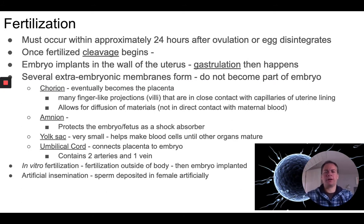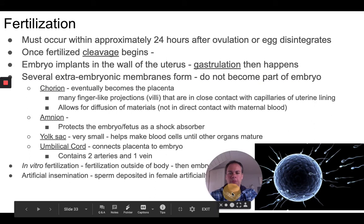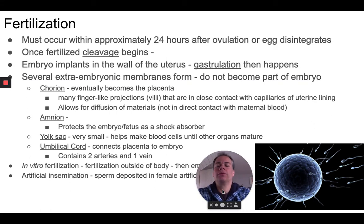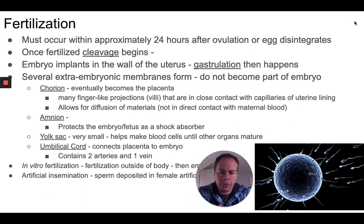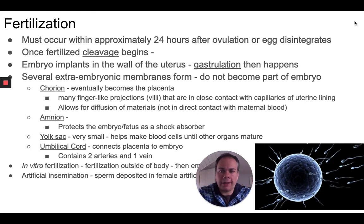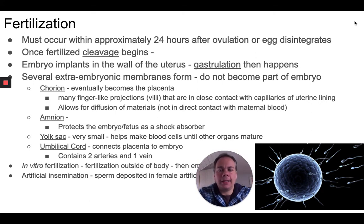Now let's talk specifically about human reproduction and fertilization. In humans, fertilization typically has to occur within about 24 hours of ovulation. Thinking back to the reproductive cycle, about halfway through a woman's cycle, ovulation takes place — she releases an egg cell from an ovary, which then begins traveling through the oviduct or fallopian tube. While the egg is in the fallopian tube is the time when it can be fertilized by a sperm cell.